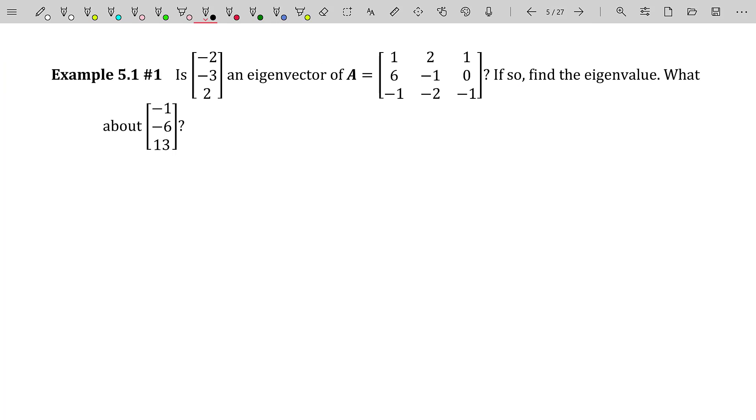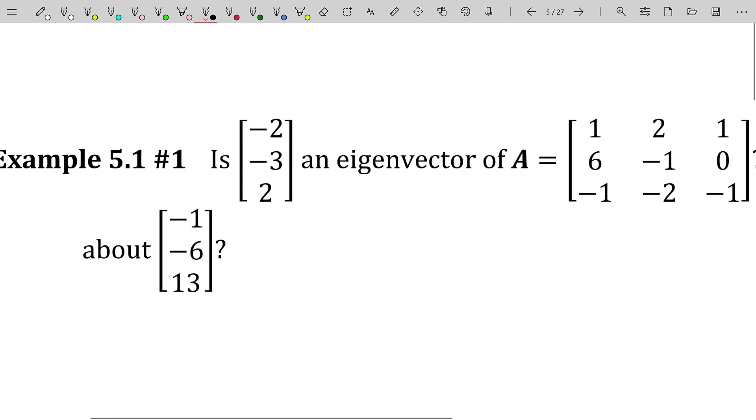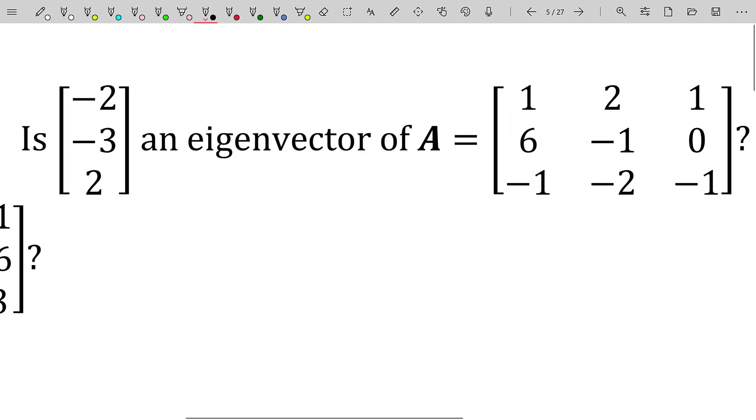Now, if you watch my videos, generally I hop into some theorems right after a definition, something like that. But I'd rather actually just tackle an example here because honestly, eigenvectors, eigenvalues are best learned through examples. So is the vector negative two, negative three, two, an eigenvector for this matrix right here? I'm not going to look at the rest of the question. I just want to read this. If this vector, which I'll just call X, if that vector X is an eigenvector for the matrix A, then it should be the case that when I multiply A against that vector, it will just become a scalar multiple of the original vector X. Well, let's see if that's the case.